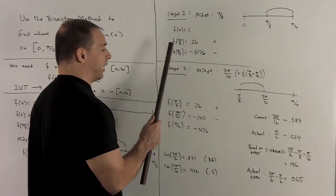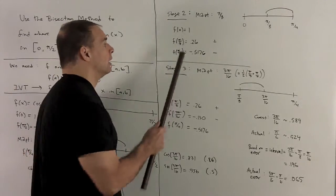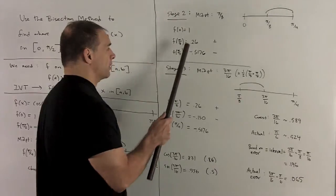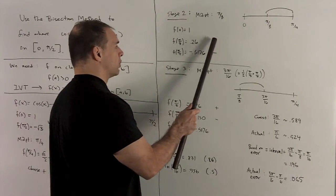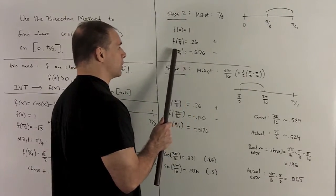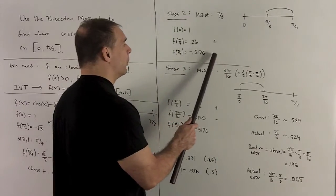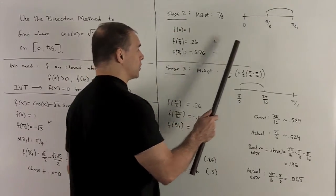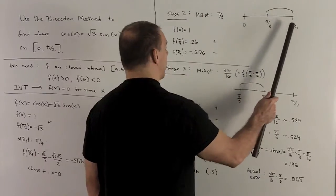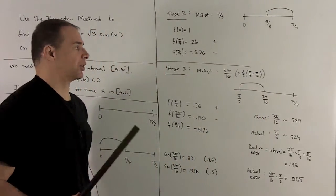And then if I evaluate at π/8, I'm going to need a calculator, I'll get 0.26. So the value here is positive. So I choose the endpoint which has the negative value, which is going to be π/4. So my next interval that I use is going to be from π/8 to π/4. So that's stage two.